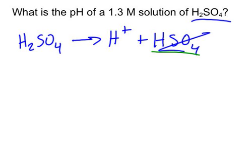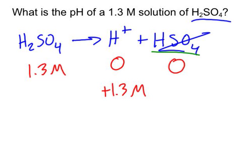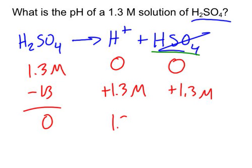So if I have a 1.3 molar concentration of H2SO4, and I start with zero of each of these, it's pretty much going to go up by the 1.3. So you're going to end up with zero, 1.3, and 1.3.